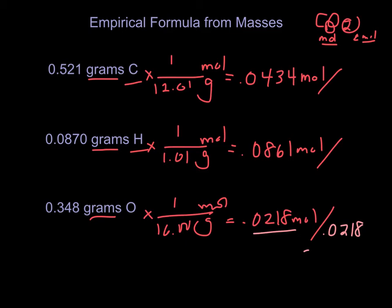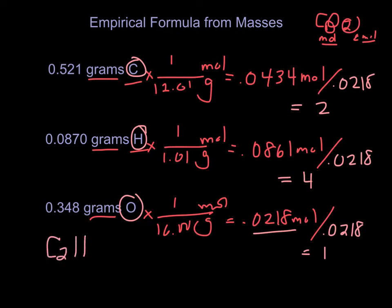Divided by 0.0218, this will be 2. And this will be 4. And this is going to be 1. So I have 2 carbons for every 4 H's for every 1 O. So I'm going to write my empirical formula as C2H4O. And that's my empirical formula.